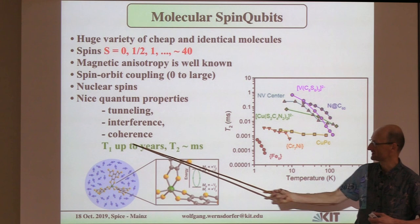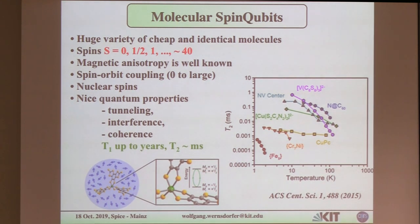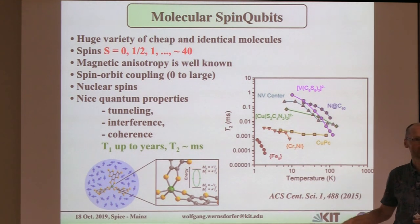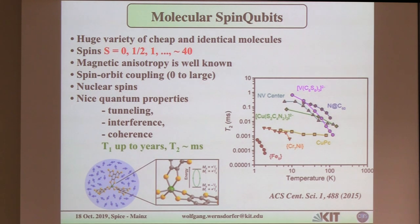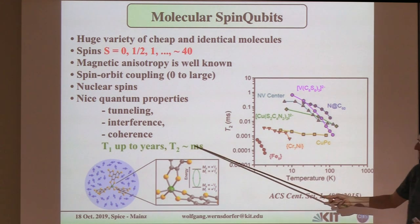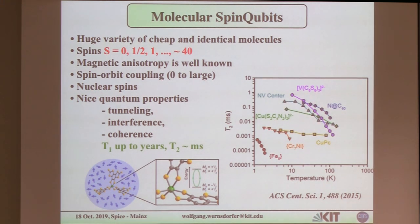With the same system, maybe not in exactly the same condition, you can also get long T2s. T2 gives you the time of how long you can keep a certain quantum information — a quantum phase — in the molecule before it's dephased by the environment. Milliseconds is something quite nice; it can rival things like NV centers. So these systems have nice coherent properties.